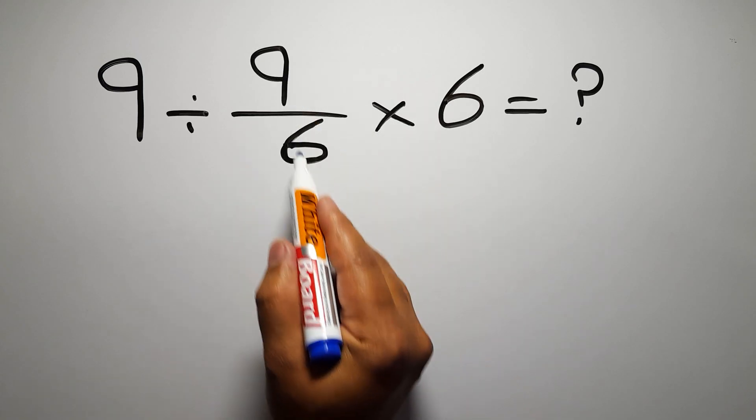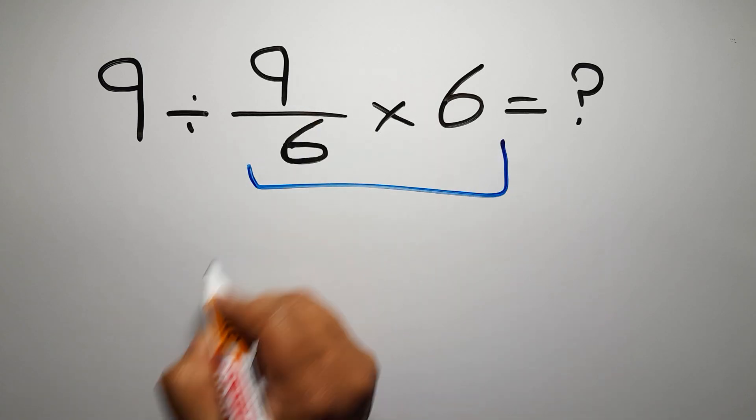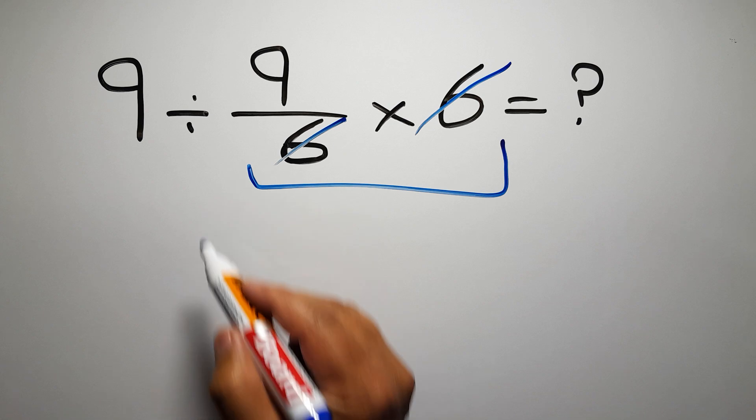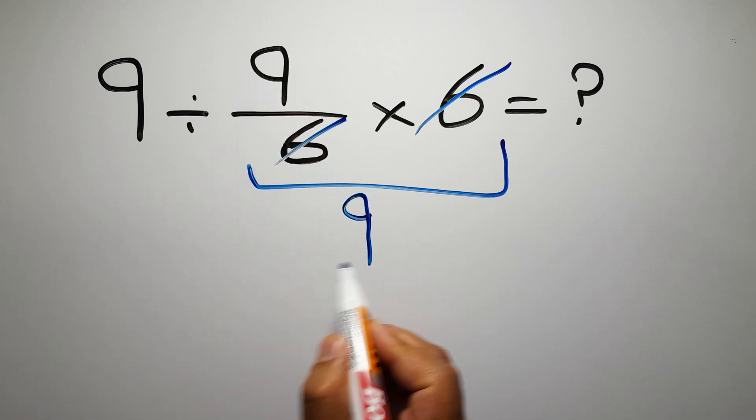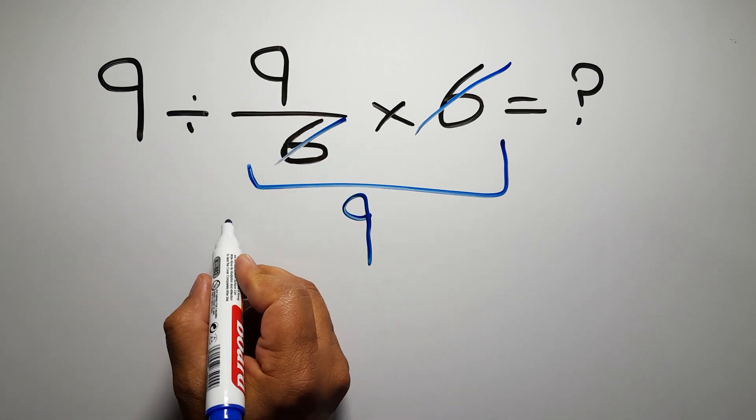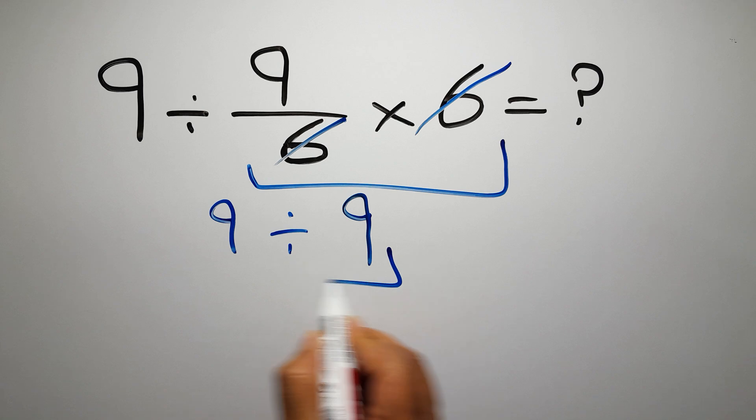First we do this multiplication, 9 over 6 times 6. We can easily cancel this 6 and this 6, so we have just 9, and the 9 divided by this 9 which equals 1. But this answer is not correct.